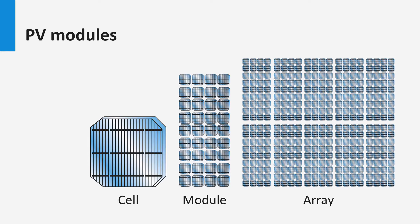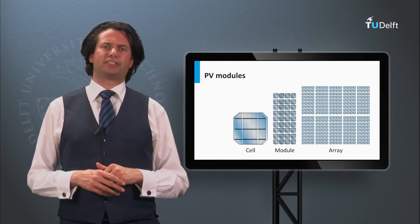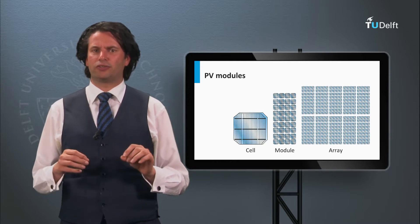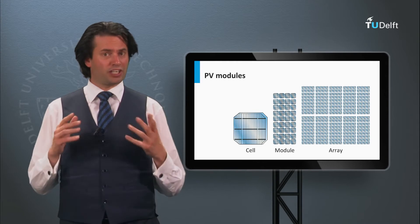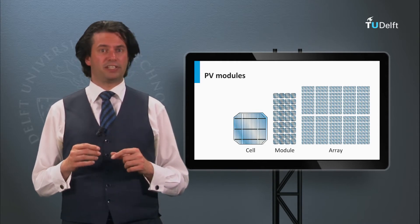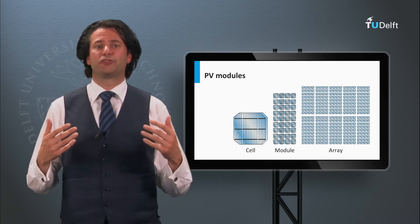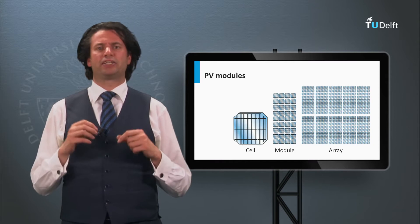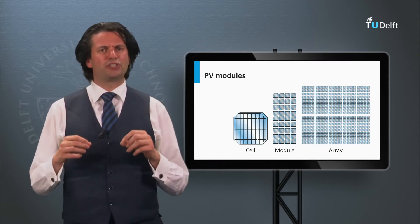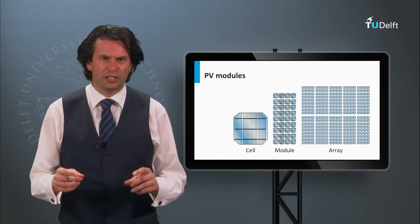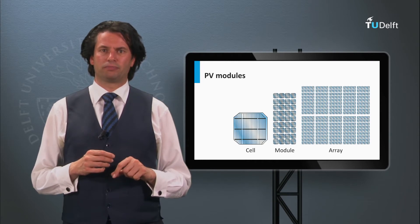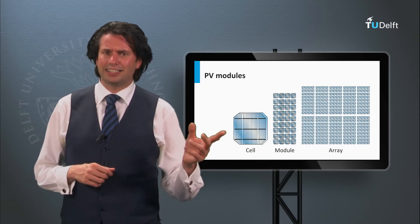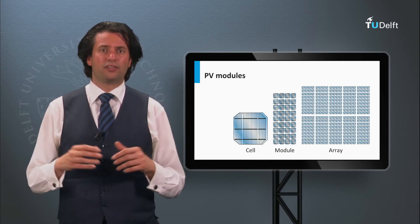Going from a solar cell up to module level gives rise to a whole new set of technical considerations. In week 7 we will discuss the operation of modules and their design considerations in the PV system in greater detail. This week we discussed crystalline silicon wafer-based PV technology. In the next week we will discuss different PV technologies based on thin film materials, such as amorphous and nanocrystalline silicon, cadmium telluride, CIGS, dye-sensitized and organic materials, and 3-5 semiconductor materials.